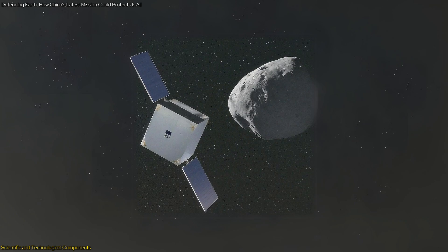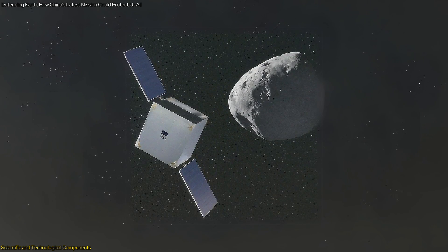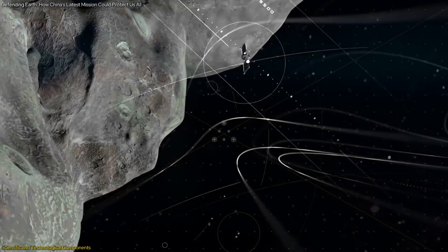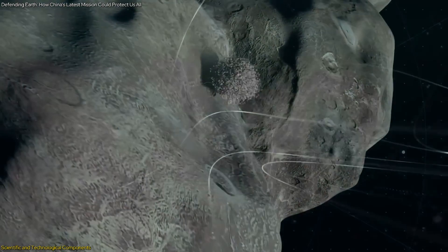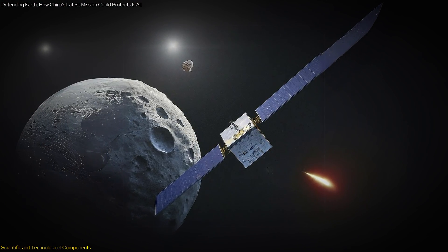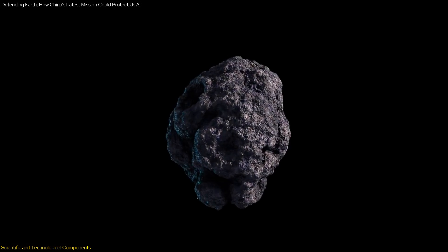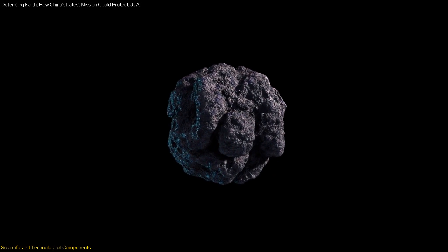The observer spacecraft will conduct three to six months of close and orbiting observations to study the asteroid's size, shape, composition, and orbit. After this phase, the impactor spacecraft will perform a high-speed kinetic energy impact test. The observer will monitor the entire impact process and evaluate the aftermath for six to twelve months to ascertain the effects. This approach will yield greater science value compared to an impact and flyby or follow-up observation.